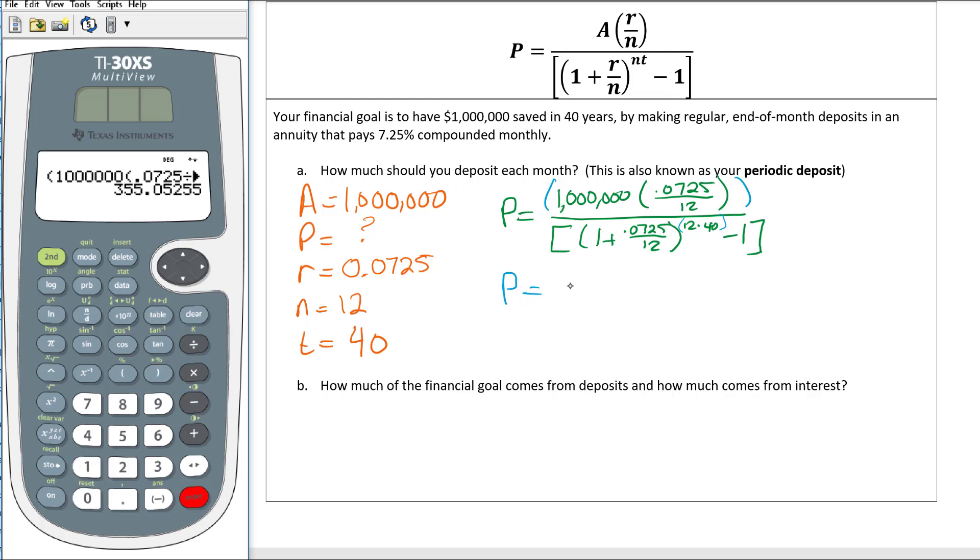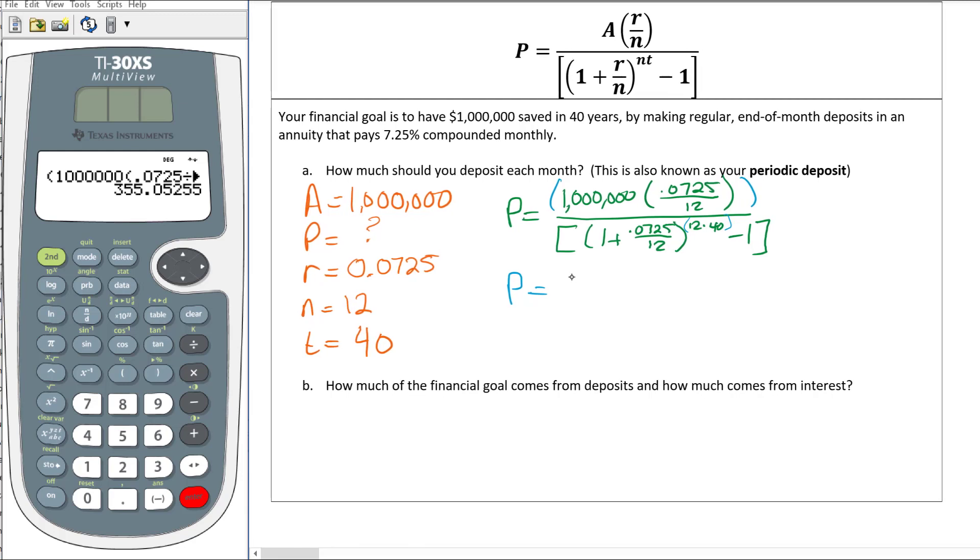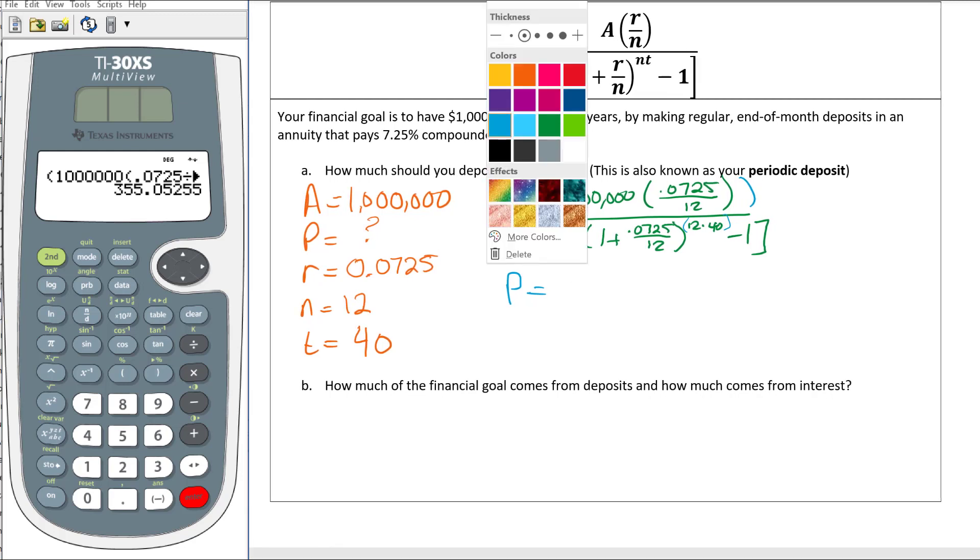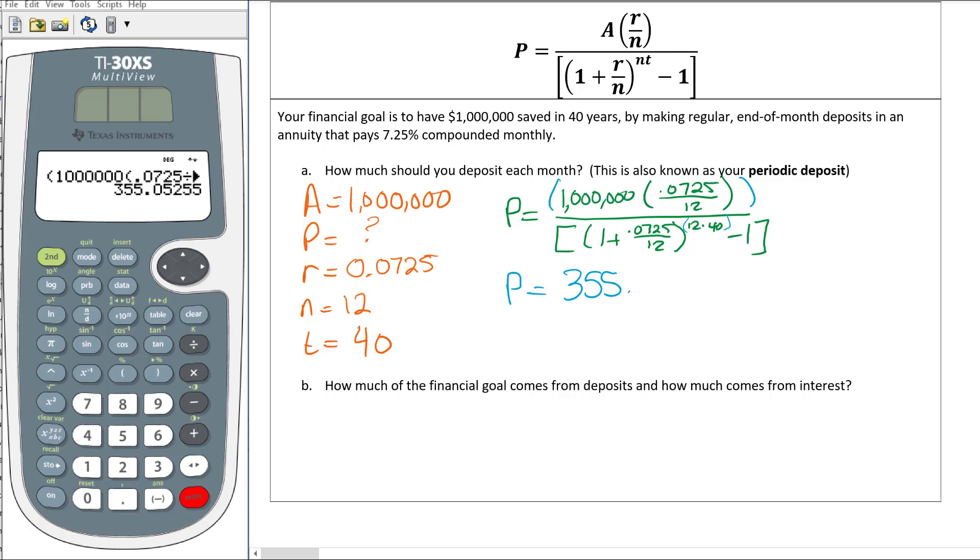So the periodic payment is going to be $355.05. All right, so if you do that every month, then in 40 years you'll have a million dollars.